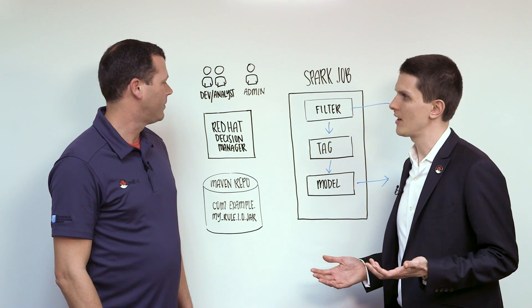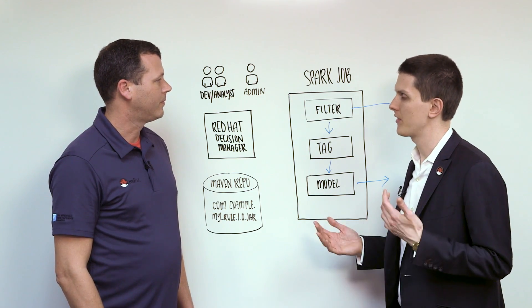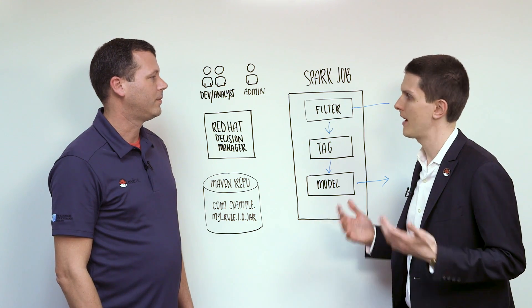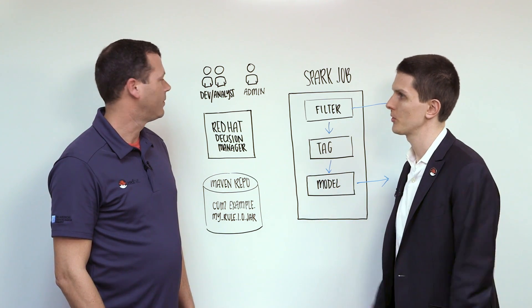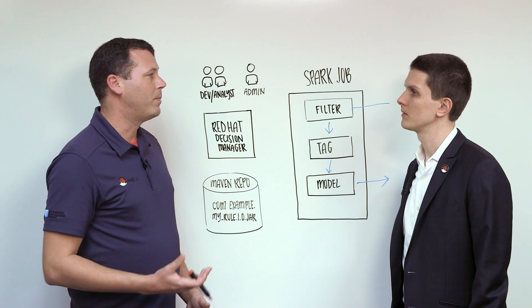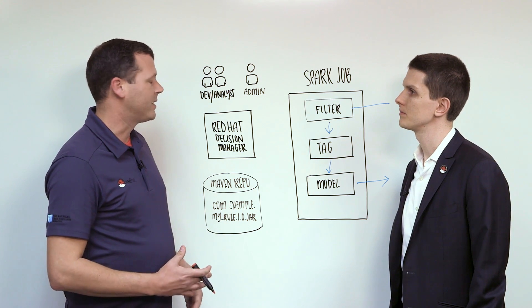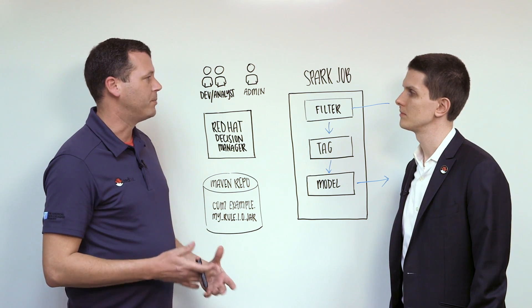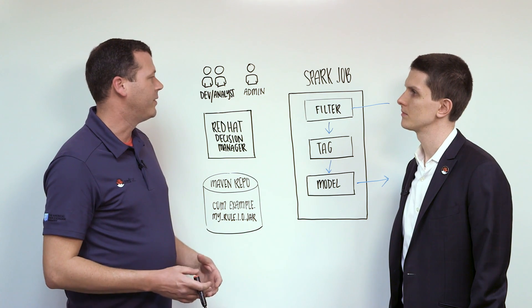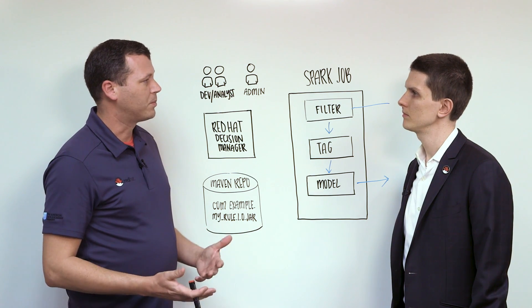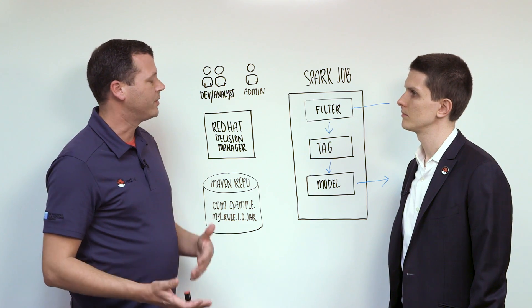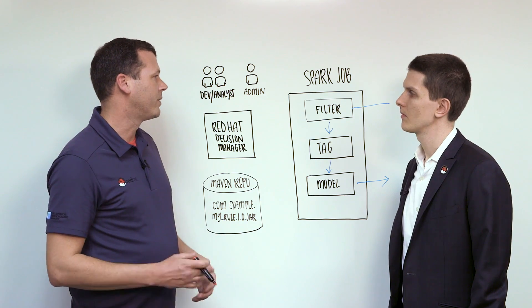So the developers and analysts, are they using tools they're familiar with or do they have to use new tools that they're not familiar with? How does that work? How do they actually build these rules? So there's a web-based UI option that's specifically geared towards your business analysts. And then there's also JBoss Developer Studio, which your developers are going to be more familiar with.